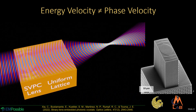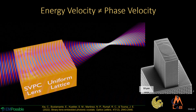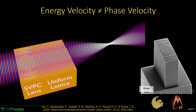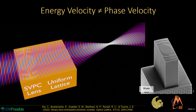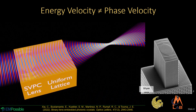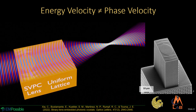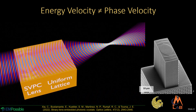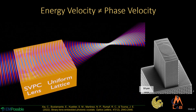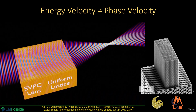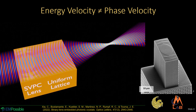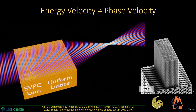It's only when that wave leaves the lattice that ordinary physics takes over, and this curved wavefront then focuses down and eventually diverges. This was actually experimentally demonstrated, and it's a great example of energy velocity and phase velocity doing two different things at the same time.